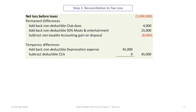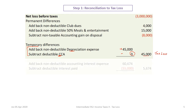Moving to temporary differences: the first set relates to accounting depreciation and CCA. We add back accounting depreciation because it's non-deductible and subtract CCA — but in this case CCA is zero. When you have a tax loss, a company won't deduct CCA, since the whole point of CCA is to reduce taxable income. If you're already in a loss position, there's no point in taking additional CCA. That gives us a net of forty-five thousand dollars on those differences.